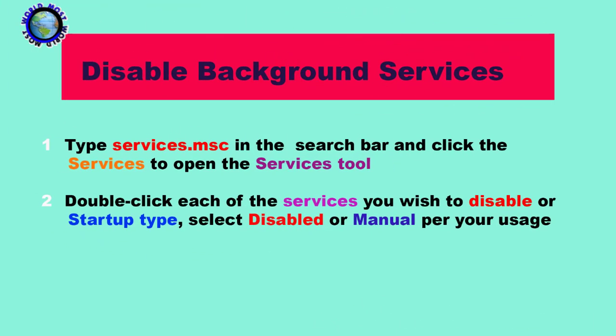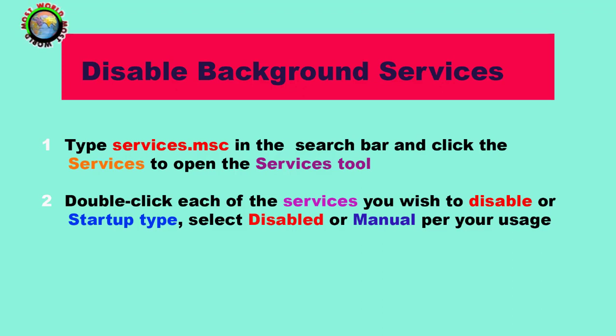In Windows 10, there are several services running in the background that are used infrequently or never, so it's best to disable them or make them start manually. Disabling such unneeded background services unclogs the system resources and the system speeds up.